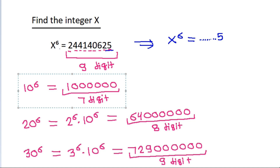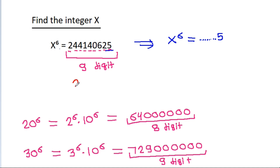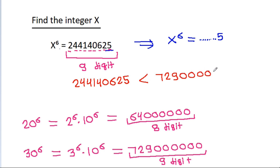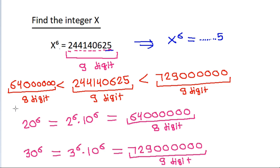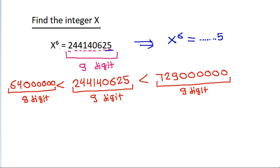244140625 has 9 digits, which is less than 729 followed by zeros (30 power 6), and greater than 64 followed by zeros (20 power 6), which has 8 digits. So 244140625 lies between 20 power 6 and 30 power 6.